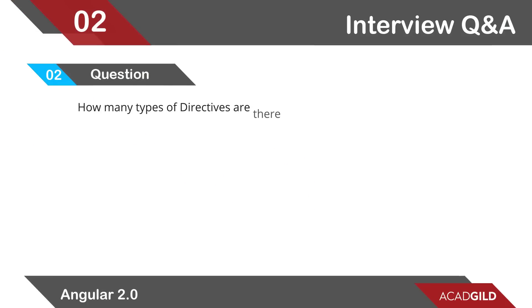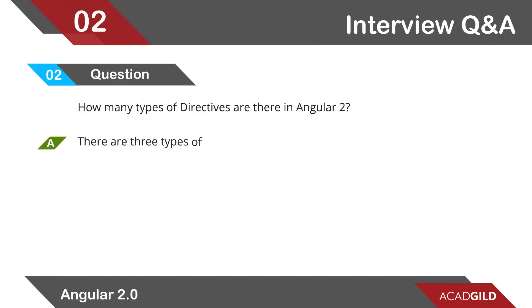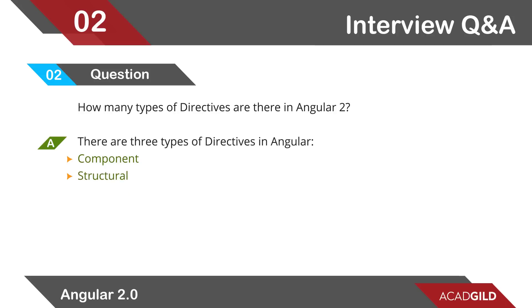Let's move to the second question: how many types of directives are there in Angular 2? There are three types: component directives, structural directives, and attribute directives — the same type we just discussed.